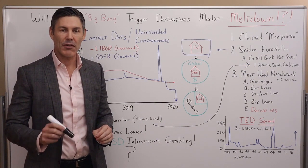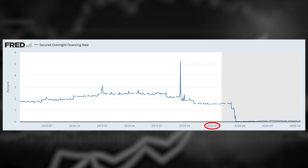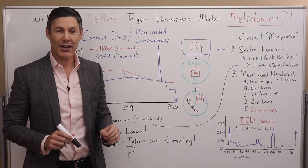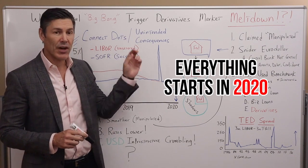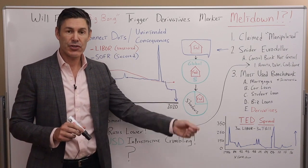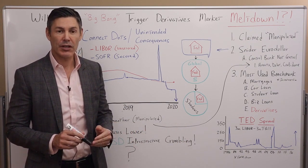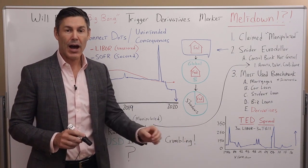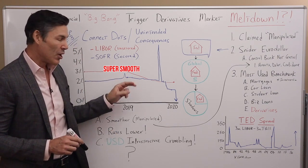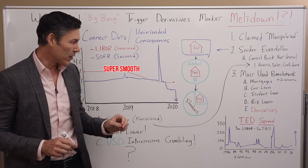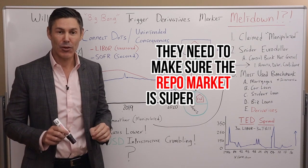Let's think this through even further. Looking at a chart of SOFR, we can see that since 2020 — and remember the timeline we discussed in step one — everything starts in 2020, the big bang transition from LIBOR to SOFR. So if I'm the Fed, I'm thinking: starting in 2020, now that we're trying to transition into this SOFR rate, I better pay attention to it and make sure it's super, super smooth. Well, in order to get SOFR super smooth, they need to make sure the repo market is super, super smooth.